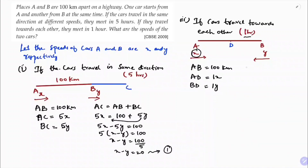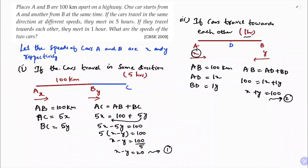From the diagram, AB = AD + DB, so 100 = 1x + 1y. Therefore x + y = 100. This is equation 2.